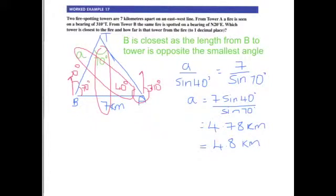You might also notice that because these two angles were both 70, it makes this an isosceles triangle. So actually A is also 7 kilometers from the tower, but you didn't need to do that one.